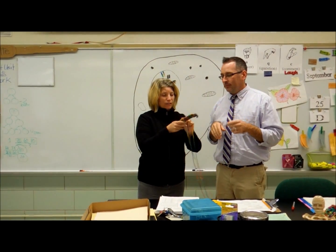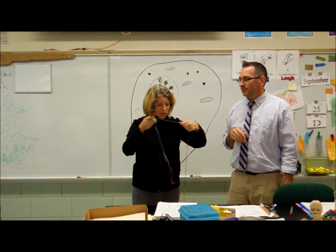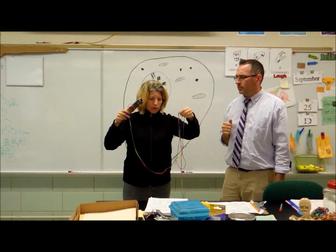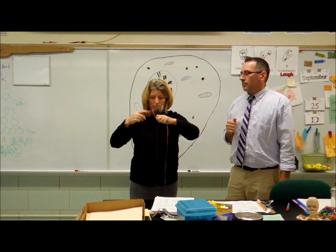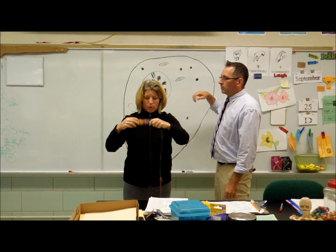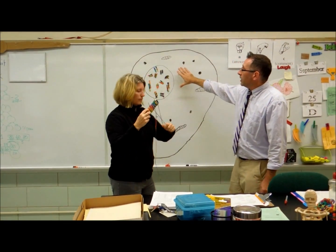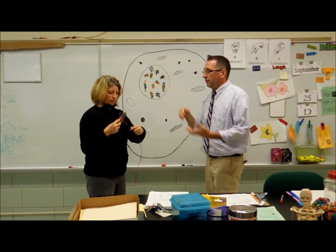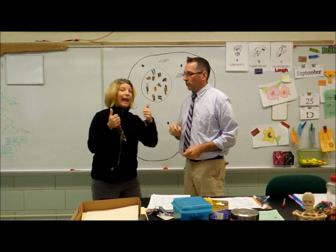Last year I learned that when the cell is just hanging out, the DNA does not coil up, but when it gets ready to divide, the DNA coils up into this rod-shaped structure known as a chromosome. That's right. So this cell must be ready to divide, because you can see the chromosomes in the nucleus. The DNA has coiled itself up into chromosomes.